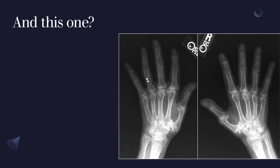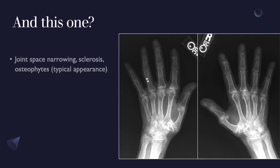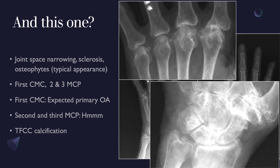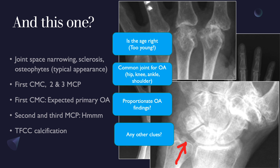In this final case, the hand radiograph shows typical joint space narrowing, sclerosis, and osteophyte formation at the first carpometacarpal joint and the second and third metacarpophalangeal joints. The first CMC involvement is reasonably acceptable as primary OA, but the second and third MCP joints give us pause, as these are not common locations for primary osteoarthritis. Looking more closely, we can confirm OA at the second and third MCPs, and at the wrist we can see calcification of the triangular fibrocartilage.